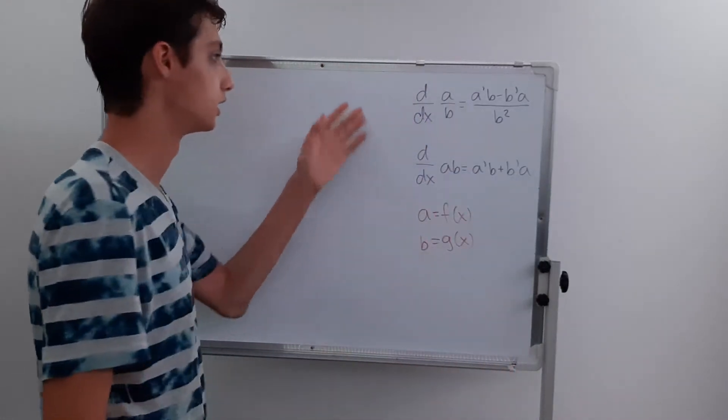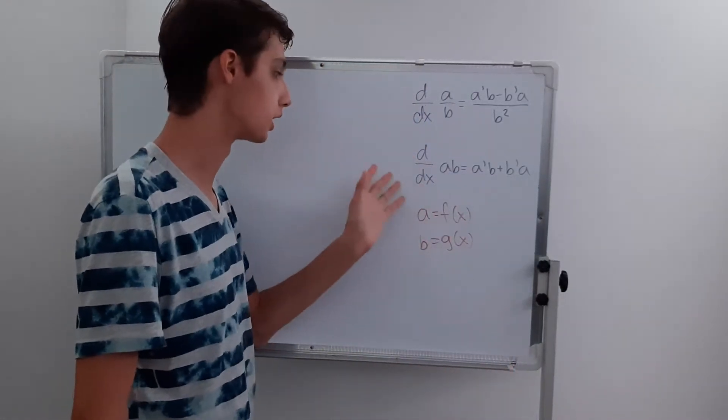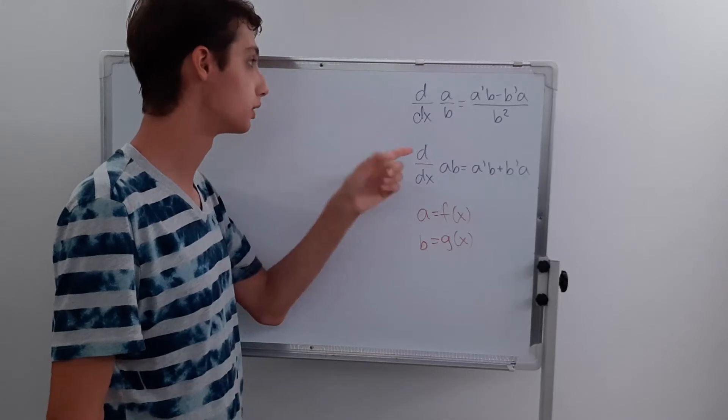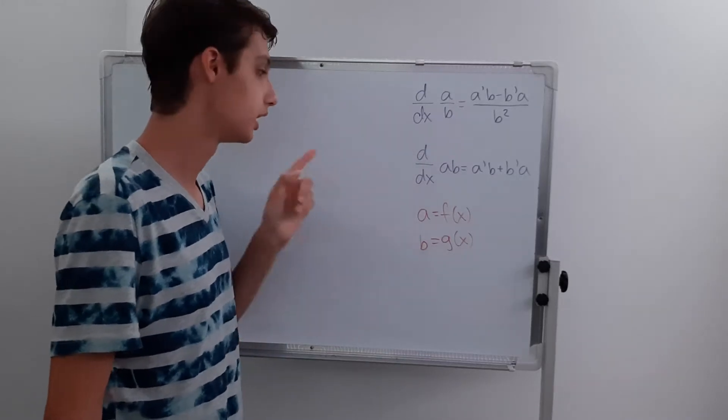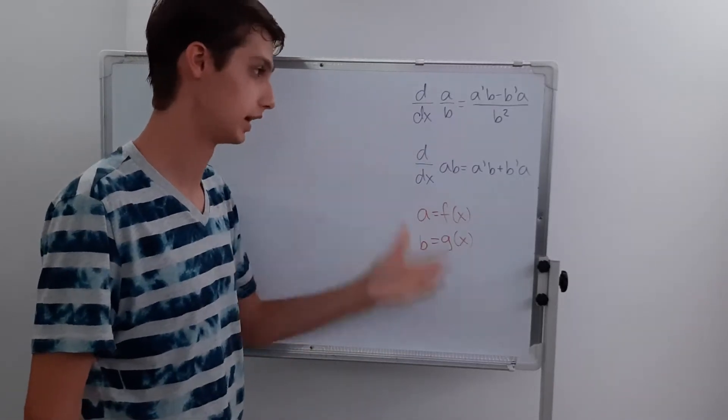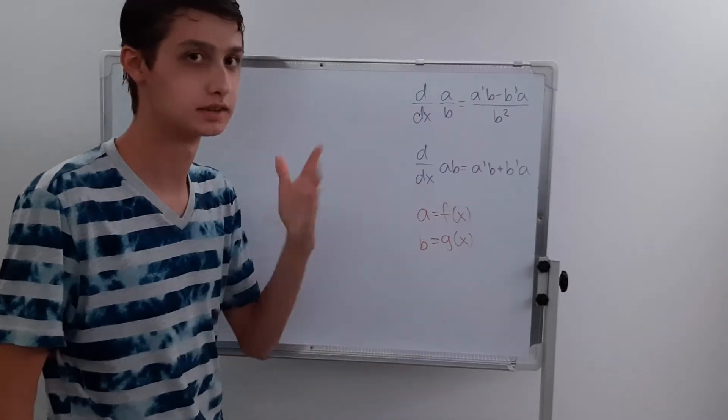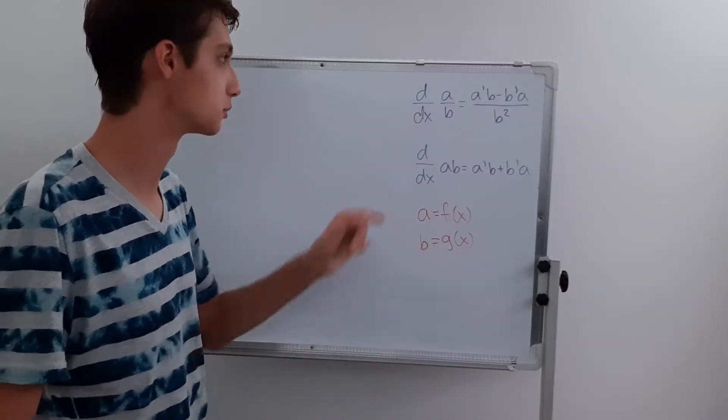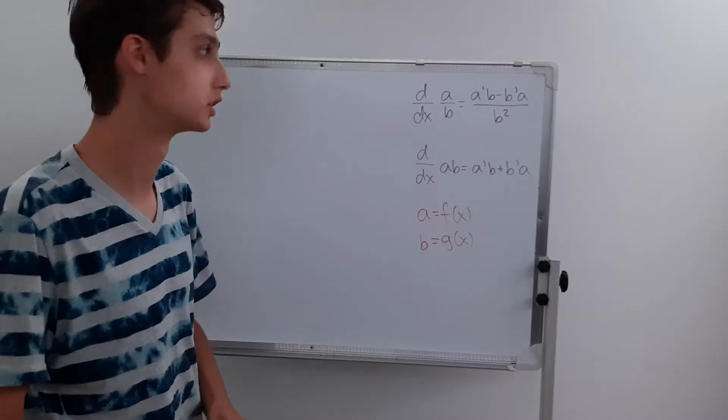So here we have the quotient rule, the product rule, and notice how I use a's and b's. They're both functions of x, I just don't want to have to write a of x, b of x, etc. So just for simplification, but these are the rules that you should know.